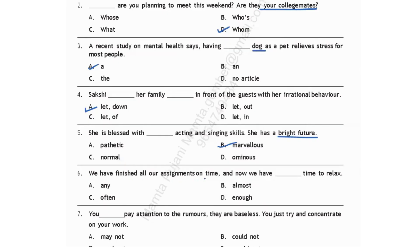We have finished all our assignments on time and now we have dash time to relax. 'Any' is used for something negative, so it can't be our answer. 'Almost a time' is not correct. 'Oftentimes' is an adverb and we don't need one here. It should be 'enough time' — we need an adjective of quantity. Option D: now we have enough time to relax.